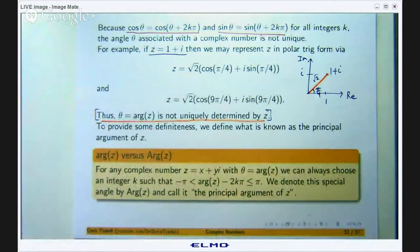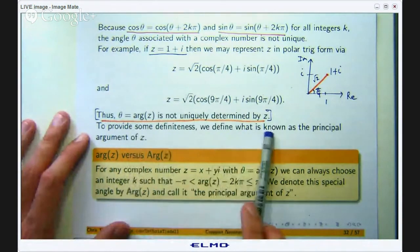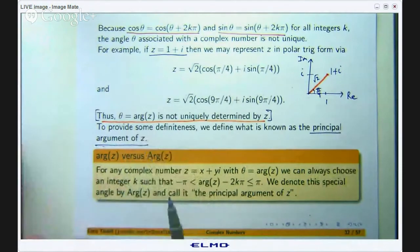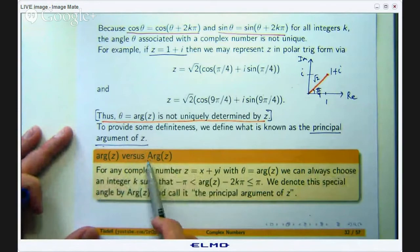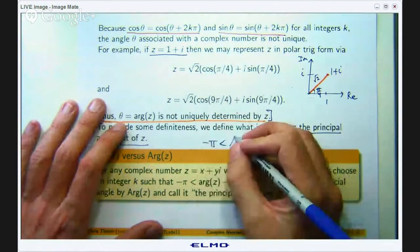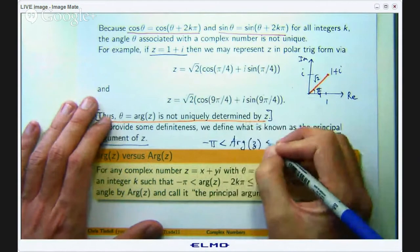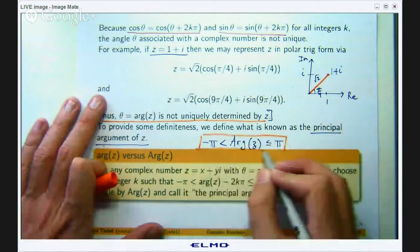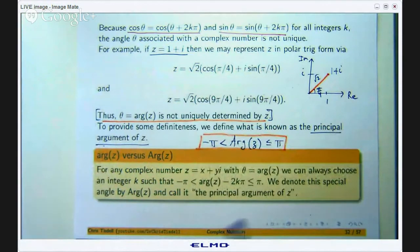This is a bit worrying but let us put some definiteness in here. We are going to now define what is known as the principal argument of z. In particular the principal argument gives us definiteness and we still call it argz but we put a capital A in. Here is the basic idea. The principal argument of a complex number is always between negative π and π. And that is really the take home message here.